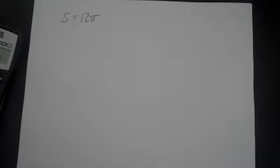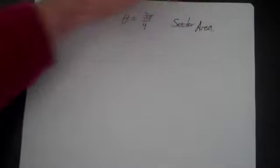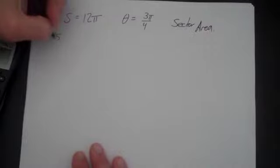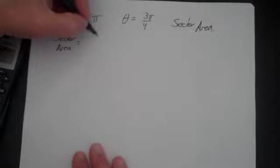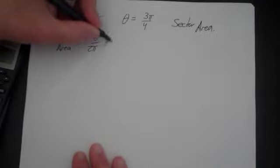Let's start to look at a harder problem. Now let's say that what you have is you have S is equal to 12 pi, and let's say theta is equal to 3 pi over 4 and you want to define sector area. Well, when we start here,